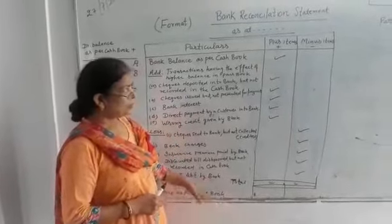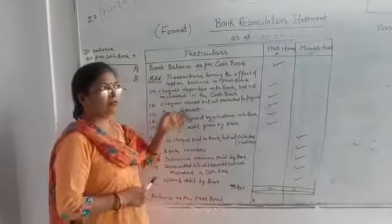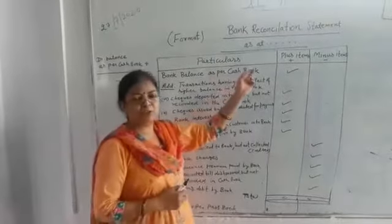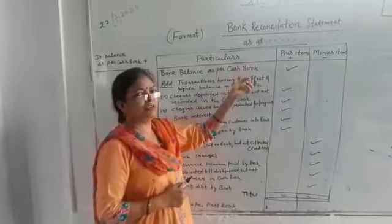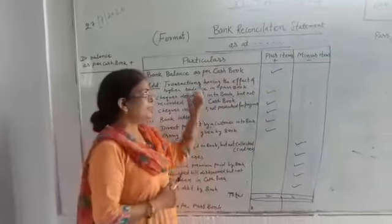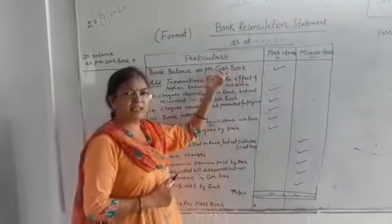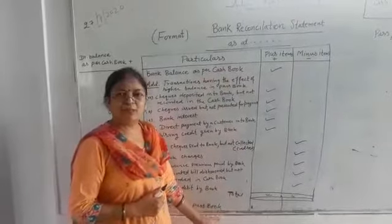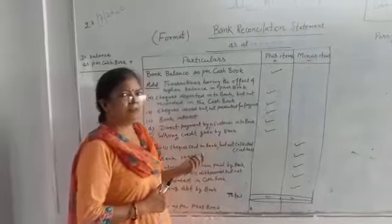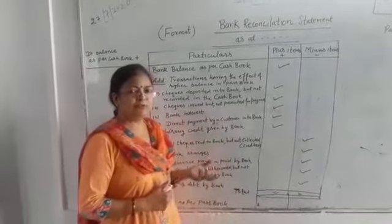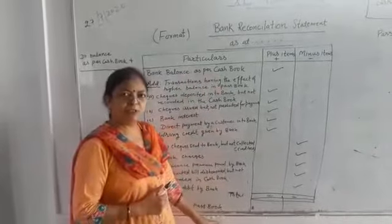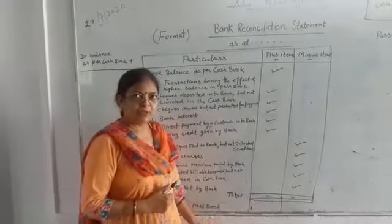So, following this format, all questions in your book that start from Balance as per Cash Book — you will have to solve all those questions. After that, I will also do a question for you where we start from the Cash Book and reach the Passbook balance. You need to follow this format. When the opposite format comes, that will be used when we start from the Passbook and need to reach the Cash Book balance.